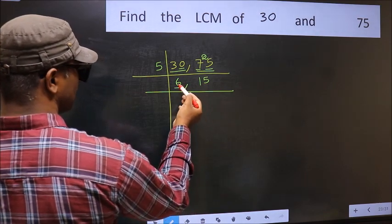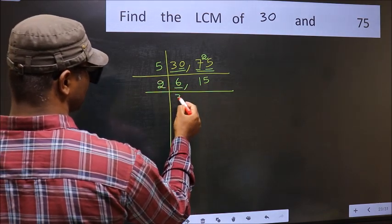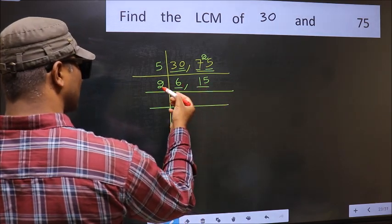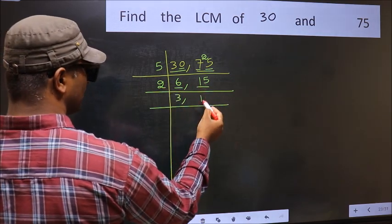Now here we have 6. 6 divided by 2 is 3. The other number 15 is not divisible by 2, so you write it down as it is.